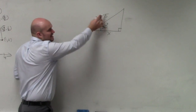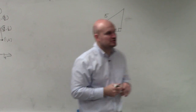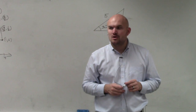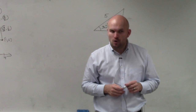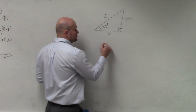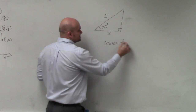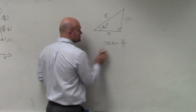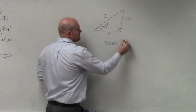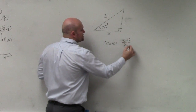So if I have the adjacent side and the hypotenuse, which trigonometric function should I use? Cosine. So I'll write my trigonometric statement: cosine of theta equals adjacent over hypotenuse.